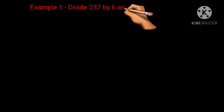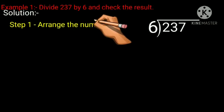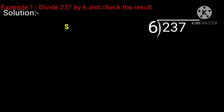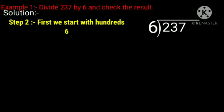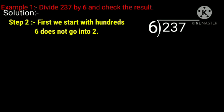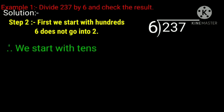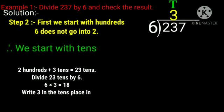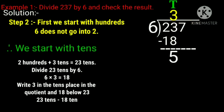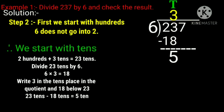Example: Divide 237 by 6 and check the result. Solution. Arrange the numerals as shown. First, we start with hundreds. 6 does not go into 2. Compare the leftmost number with the divisor. Here the leftmost number is 2 and the divisor is 6, which is greater than 2. Therefore we start with tens. 2 and 3 will make 23. Divide 23 by 6. 6 threes are 18. Write 3 in the tens place in the quotient and 18 below 23. 23 minus 18 equals 5.